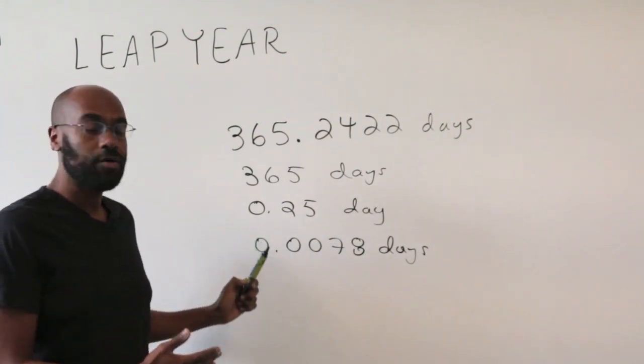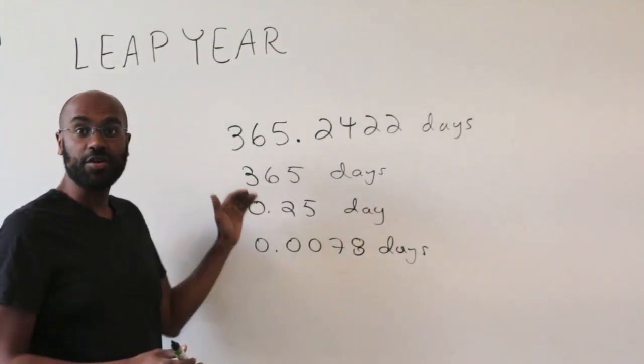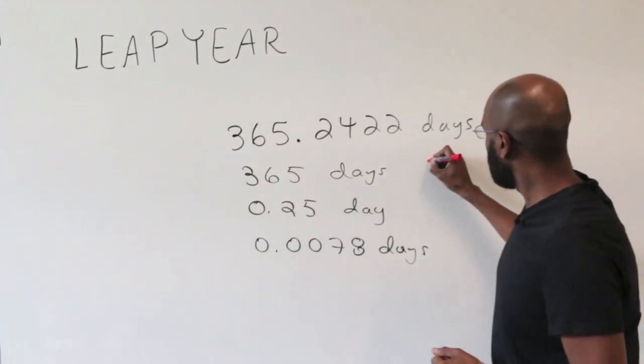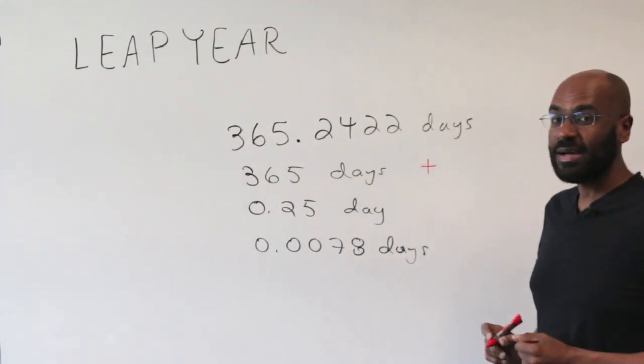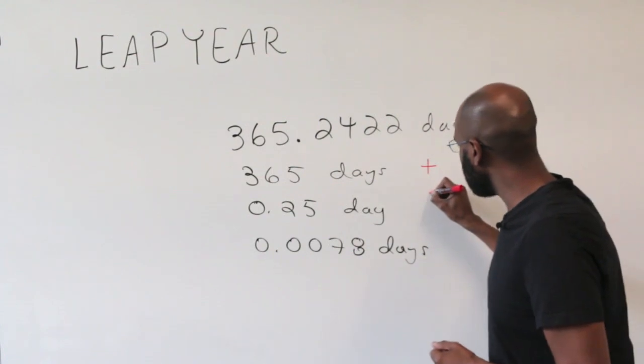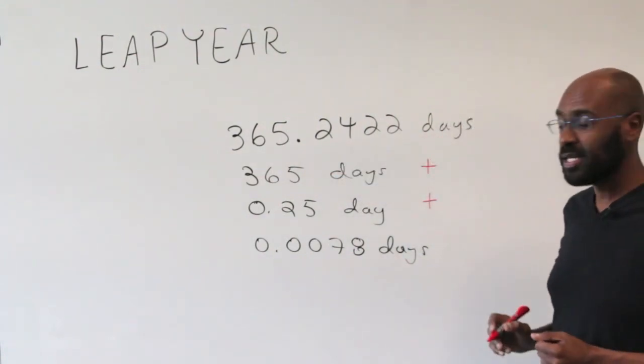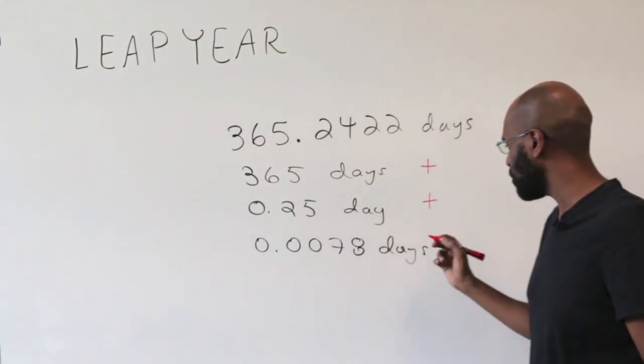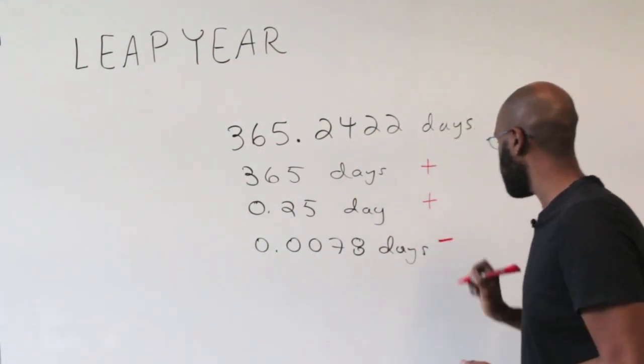Alright, so let's take a count as to what happens in a given year with this division of days. In a particular year, we'll get the 365 days here, and then we'll also get the additional quarter of a day that comes from this extra right here. But then we're going to lose this ever so tiny fraction of a day. I'm going to put a minus for that.